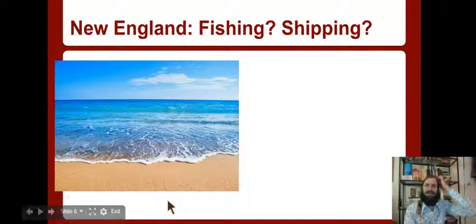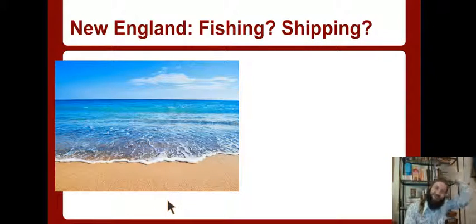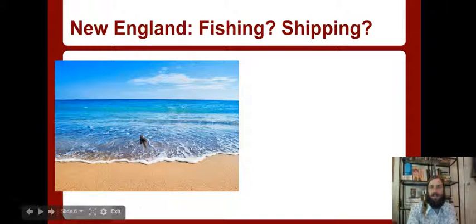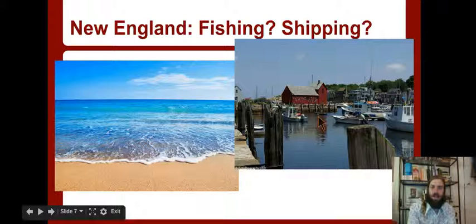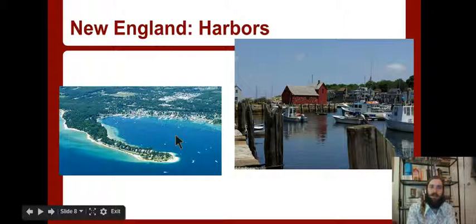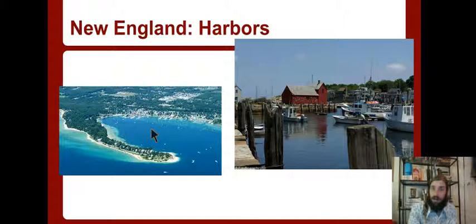Now you might be thinking, fishing and shipping - how do you just pull up a ship and load and unload goods even though you're on the coast? Well, it didn't look like an open beach - it looked more like a harbor. A harbor is a protected place on the coast where ships can pull in and have protection from waves, a protected place to load and unload goods.